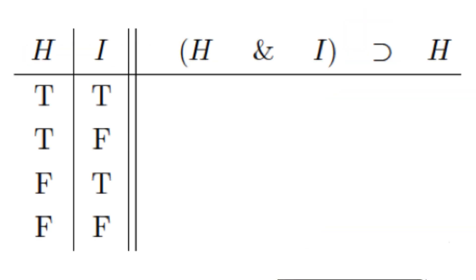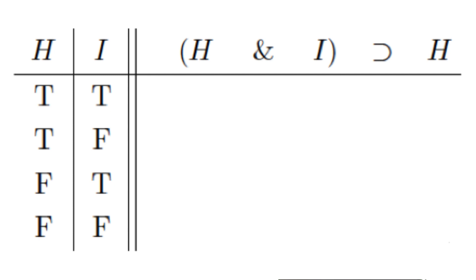After we're done filling in the reference column with T's and F's, we then copy those reference truth values to the same variables on the right side of the double line underneath the letters in the sentence, like so.